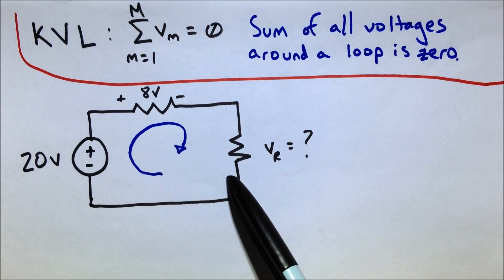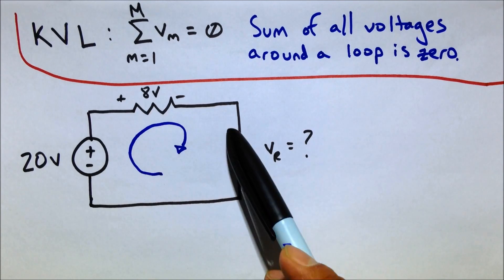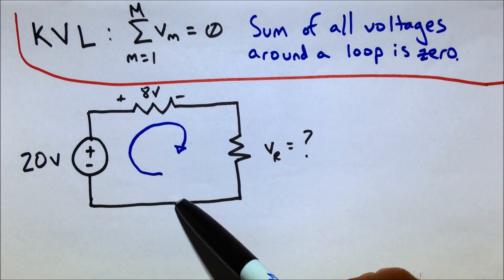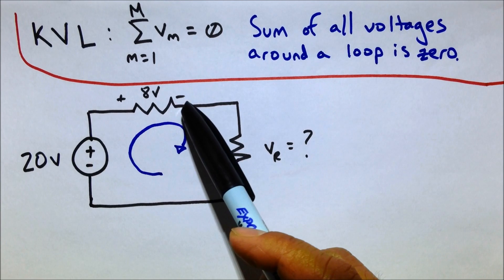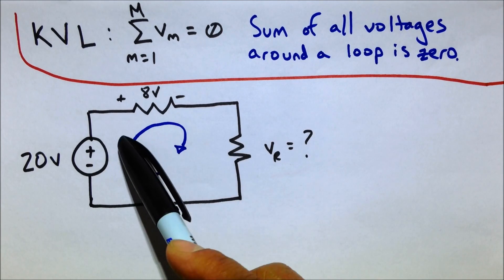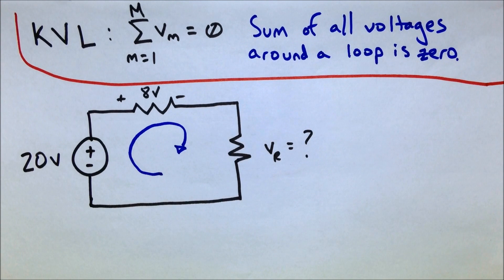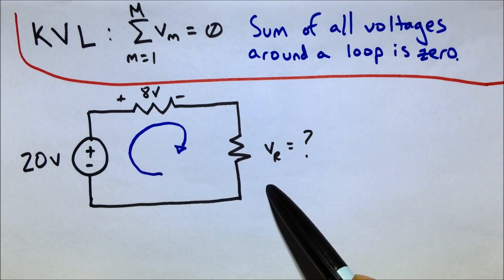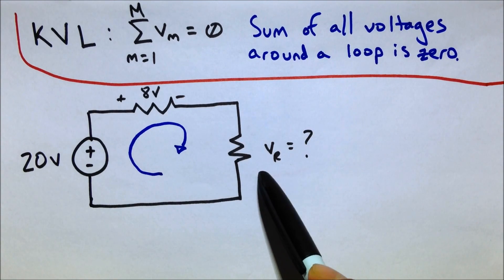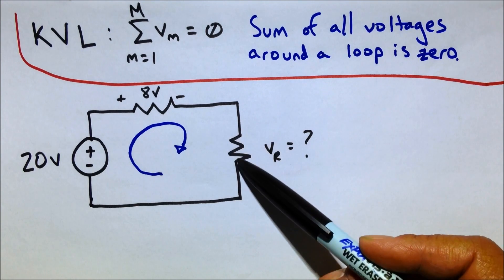So here's a sample circuit. This circuit has three elements to it. And if you notice, it's configured so that there is a loop. There's only one loop within the circuit. And the question I want you to try to solve is the voltage across that resistor.